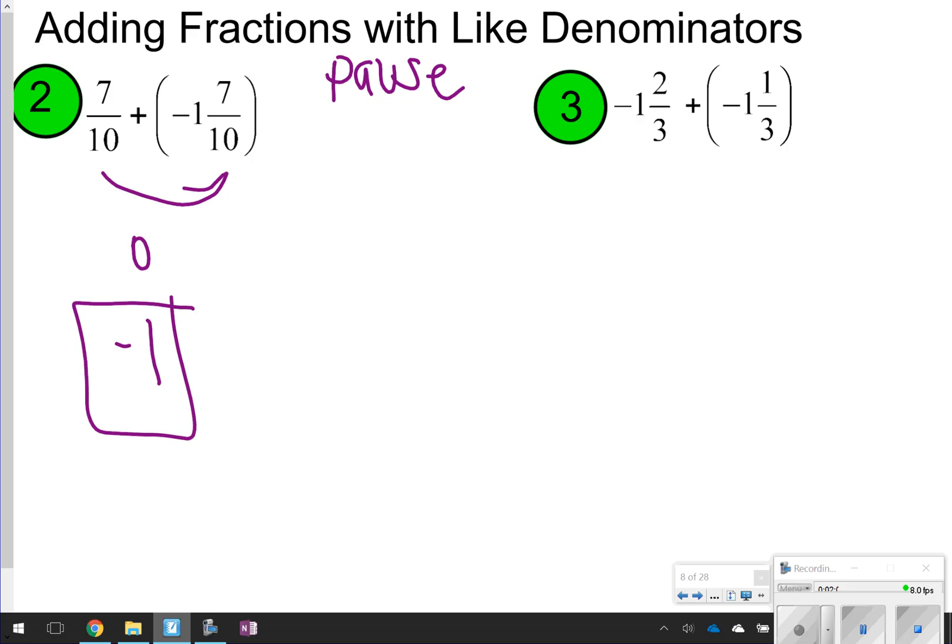For number three, we have same signs, so we're going to add and keep. Two-thirds plus one-third is three-thirds, and one plus one is two. I'm not going to keep it like this, because negative two and three-thirds, three-thirds is actually going to give me the whole number one. So I'm going to actually put the one back together with the two to get a whole number negative three for number three.